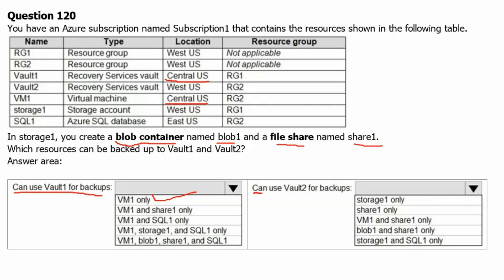For the second answer area — what can use Vault 2 for backup: Vault 2 is residing in West US location, and Storage 1 account is also residing in West US location. Please keep in mind that Storage 1 account is not entirely going to be backed up to Vault 2, because Share 1 only is going to be backed up. Blob 1 container cannot be backed up on a recovery service vault. Therefore from Vault 2, we can only back up Share 1. We cannot back up the entire Storage 1 account, and other resources are not in the same region. Therefore Share 1 is the answer for statement two.